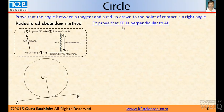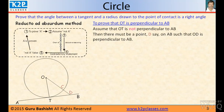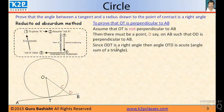To prove that OT is perpendicular to AB. Then there must be a point D say on AB such that OD is perpendicular to AB. Since OD is a right angle, O, D, T is a right angle then OD is an acute angle because this is a triangle. And if this is a right angle then other two angles have to be acute angle.